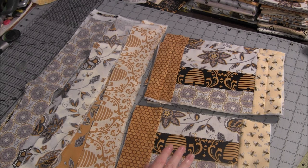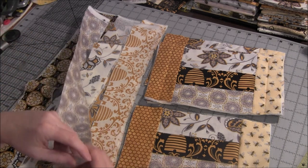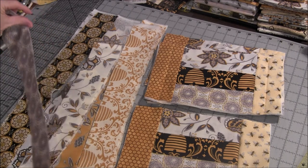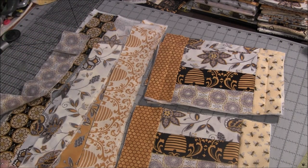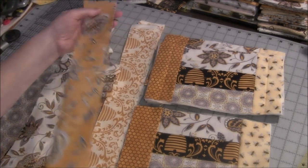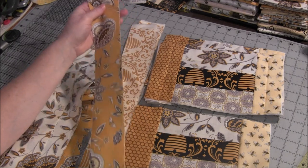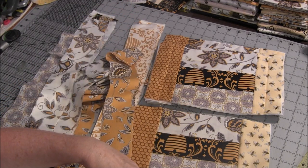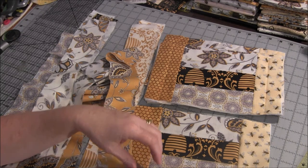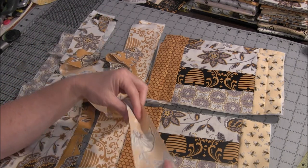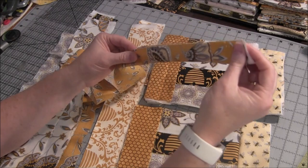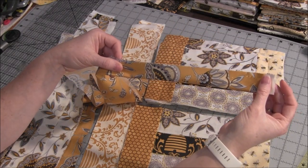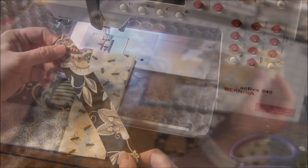I do have another tutorial on how to do this kind of binding. And again, it will be in a link in the website. The first step is pick your strip and then at your iron, fold it in half, fold it and iron it in half like this. And then we'll go over to the sewing machine and sew it on.